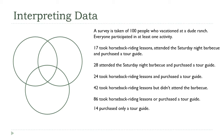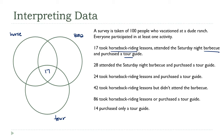To build the diagram, first I have to label my circles: horseback riding up here, the barbecue here, and the tour guide down here. To fill these in, you always want to start at the inside and work your way out. So the first thing is to find the number of people who did all three — 17 did the horses and the barbecue and the tour, so I put 17 in the middle. Now, 28 attended the barbecue and purchased a tour guide.